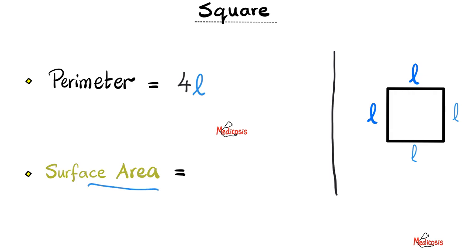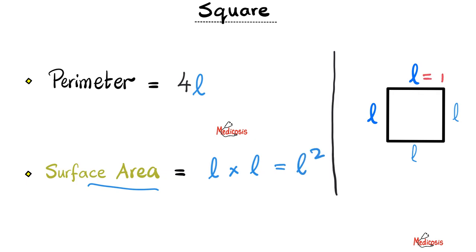How about the surface area of the square? The surface area is not the perimeter, but what's on the inside. To find it for a square, you multiply the length by the width, and since they are the same, it's L times L, or simply L squared. For example, suppose that L is 4 centimeters — the perimeter is 4 times 4 centimeters, or simply 16 centimeters.